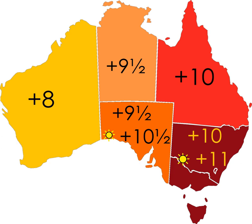When abbreviating 'Australian Central Time' and 'Australian Eastern Time' in domestic contexts, the leading 'Australian' may be omitted. However, the prefix 'A' is often used to avoid ambiguity with the time zone abbreviations 'CST' and 'EST' referring to the central and eastern time zones in North America.